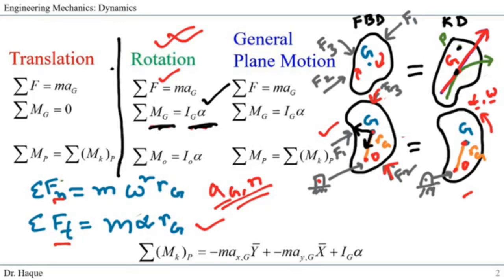Sometimes you may want to take the moment about a point other than Z — for example, point O, the axis of rotation. For rotation, taking the moment about point O can reduce the number of variables and make the problem easier to solve.